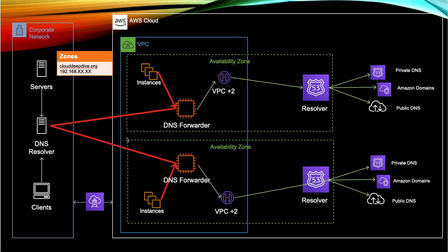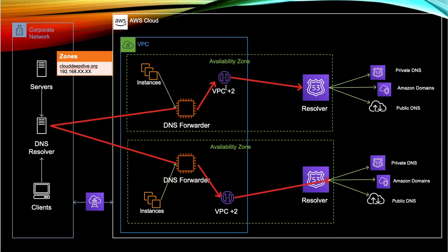Anything else would be sent to VPC plus-2, which goes to Route 53 Resolver, resolving it by first checking private DNS, then Amazon domains, then public DNS. For the reverse case — if your corporate network needs to resolve a DNS name belonging to your VPC — you'd add rules in the DNS resolver to send anything VPC-related to the DNS forwarder. Since the DNS forwarder can be accessed from outside the VPC, unlike the VPC plus-2 address, it receives those queries and forwards them to VPC plus-2, which resolves accordingly.